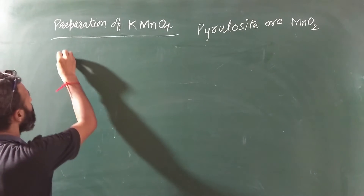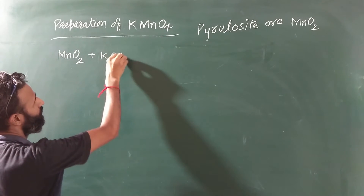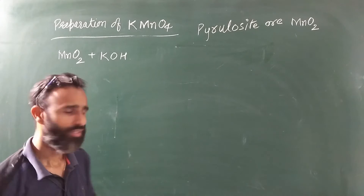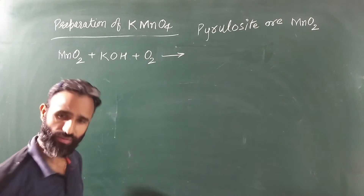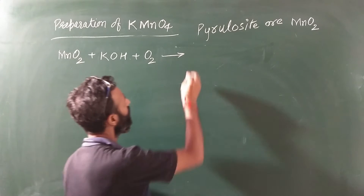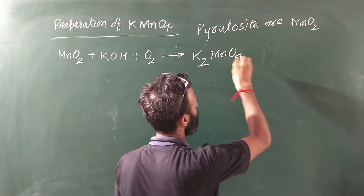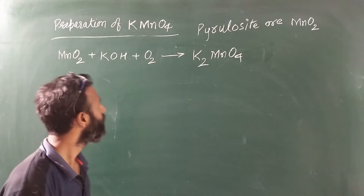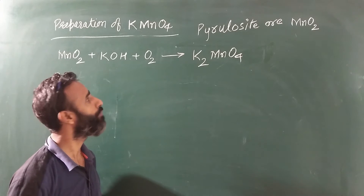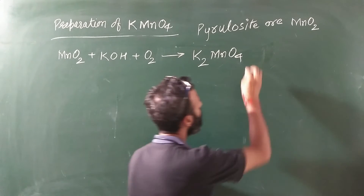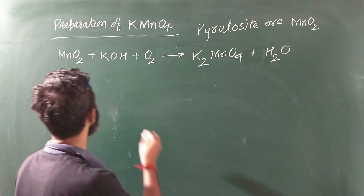So the first thing is MnO2 in an alkaline medium in the presence of an oxidizing agent like oxygen. MnO2 gives us K2MnO4. So MnO2 gives K2MnO4, along with H2O. Now balance it.